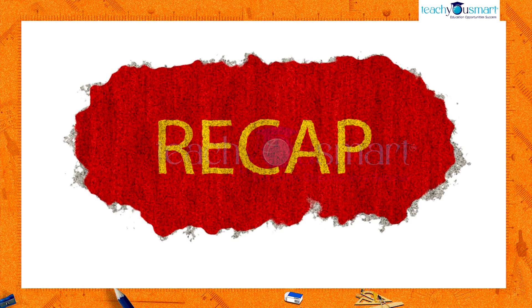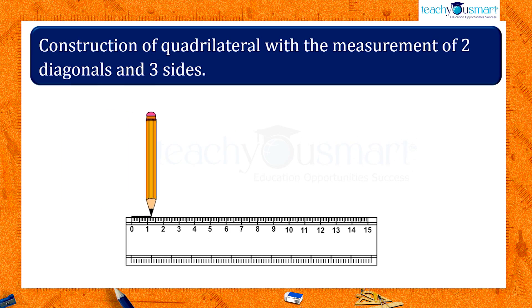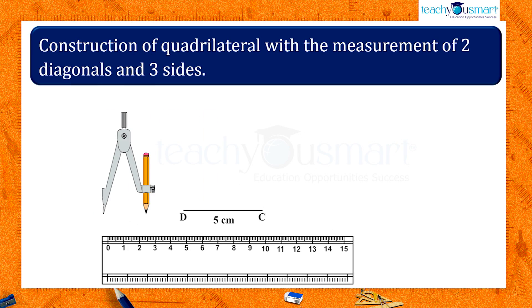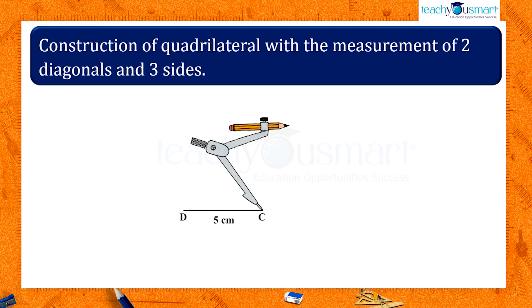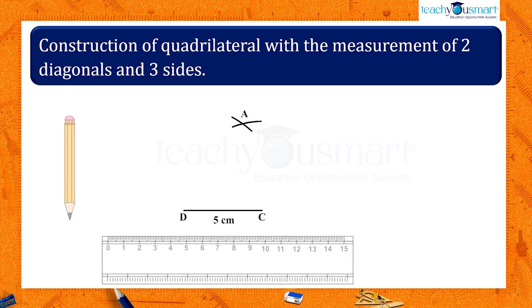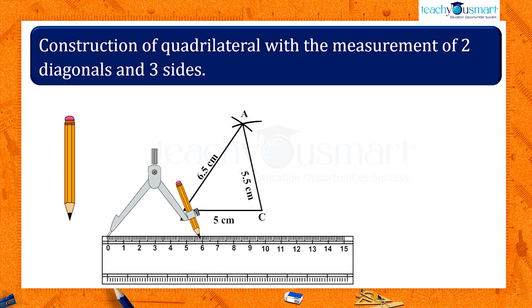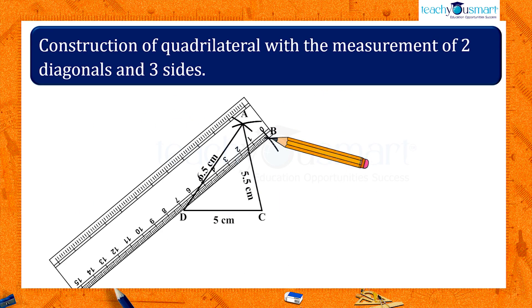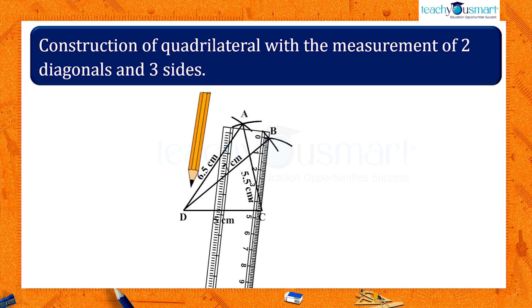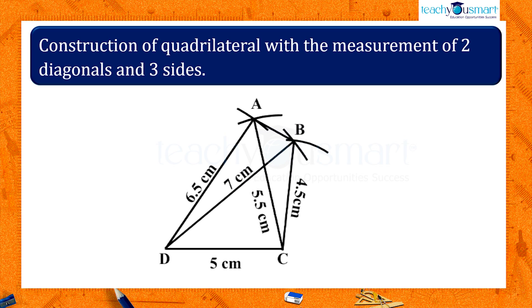Let's conclude: we have studied how to construct a quadrilateral when two diagonals and three sides are given. We split up the quadrilateral into two triangles and constructed these triangles and joined them together to form the quadrilateral.